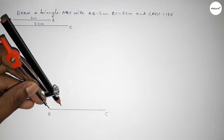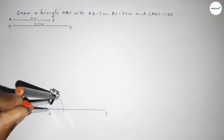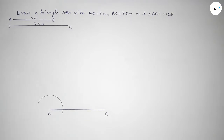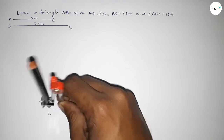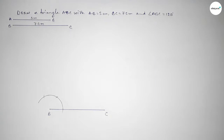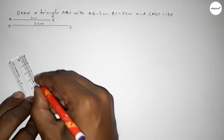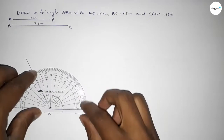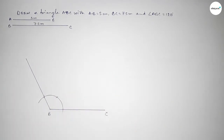Next we have to draw a 120 degree angle at point B. Putting the compass on point B, taking any length and drawing an arc. With the same length, putting the compass on the arc and cutting here, then putting the compass again and cutting here so both curves intersect at a point. Joining this line to get the 120 degree angle — checking the angle — this is perfectly 120 degrees.